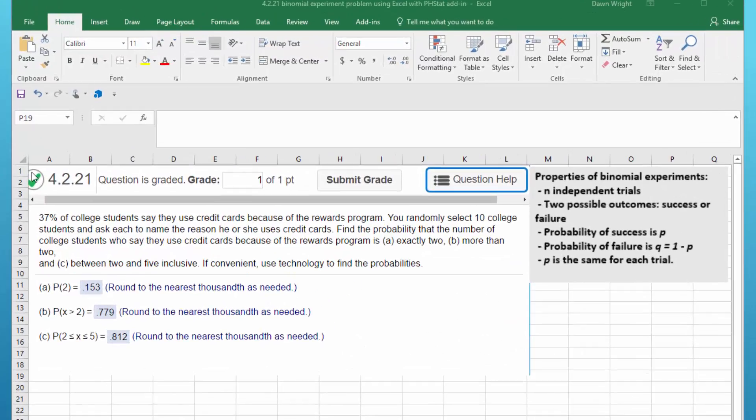Hi, this is Don and I wanted to go over a homework problem that one of your peers was having some difficulty with. It is in chapter 4 section 2, which is about the binomial experiment. In this problem we're given that 37 percent of college students say they use credit cards because of a rewards program.